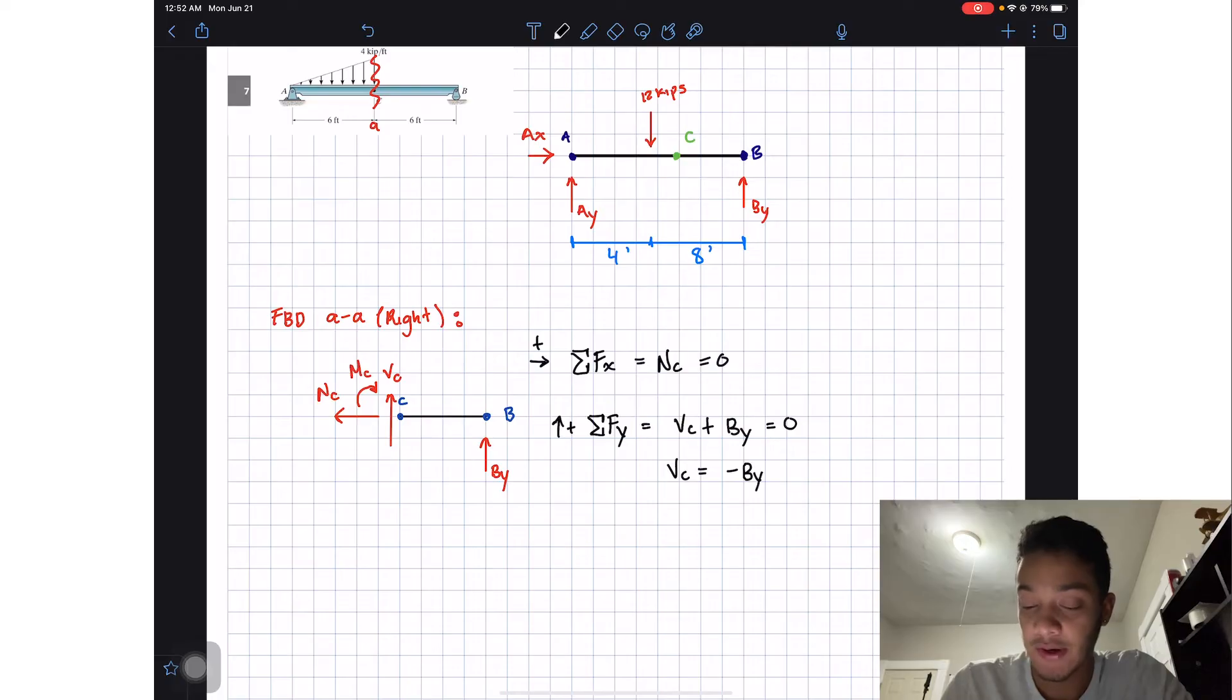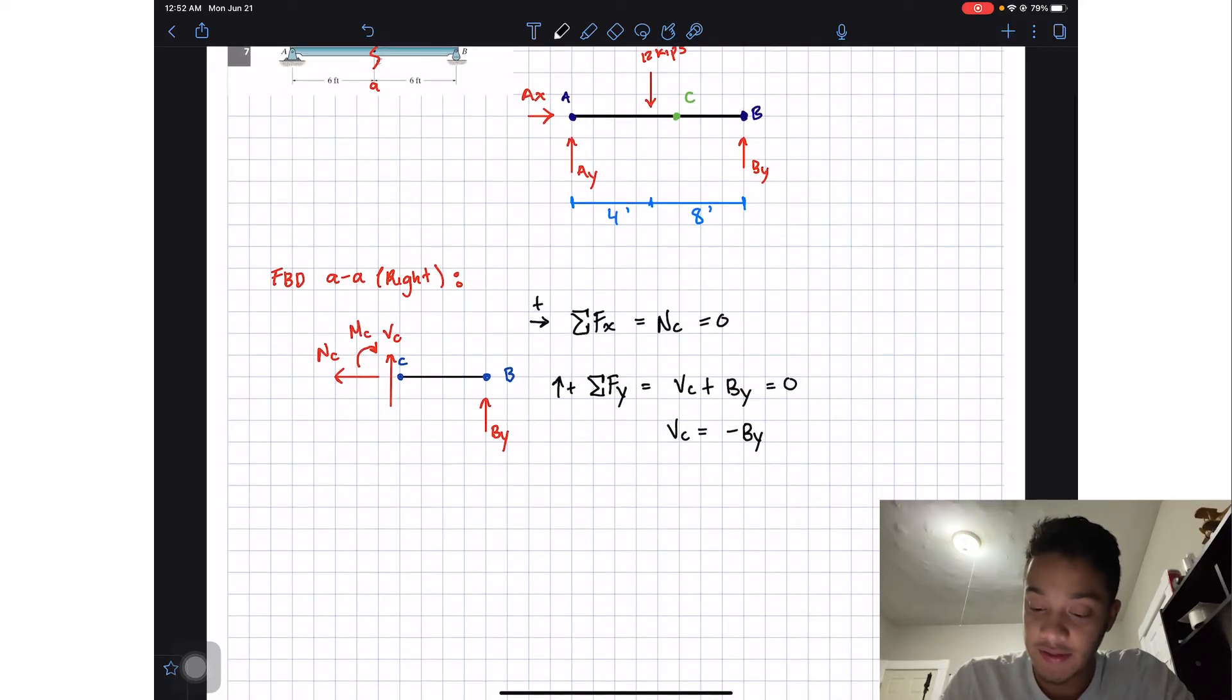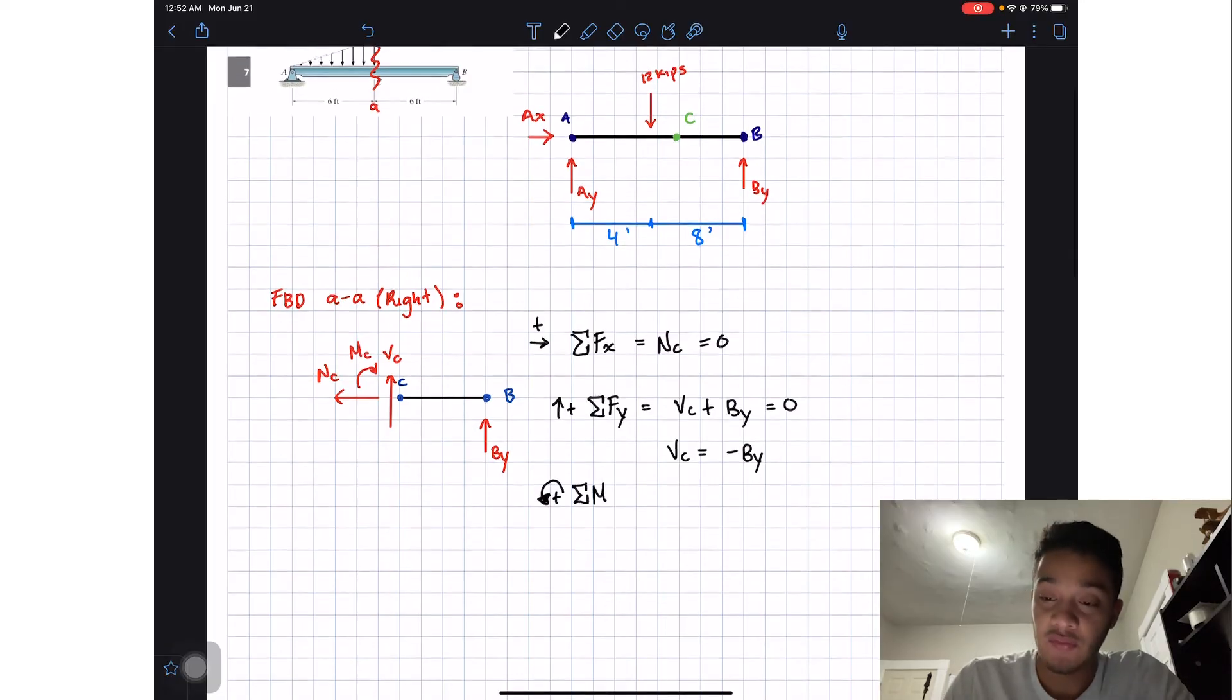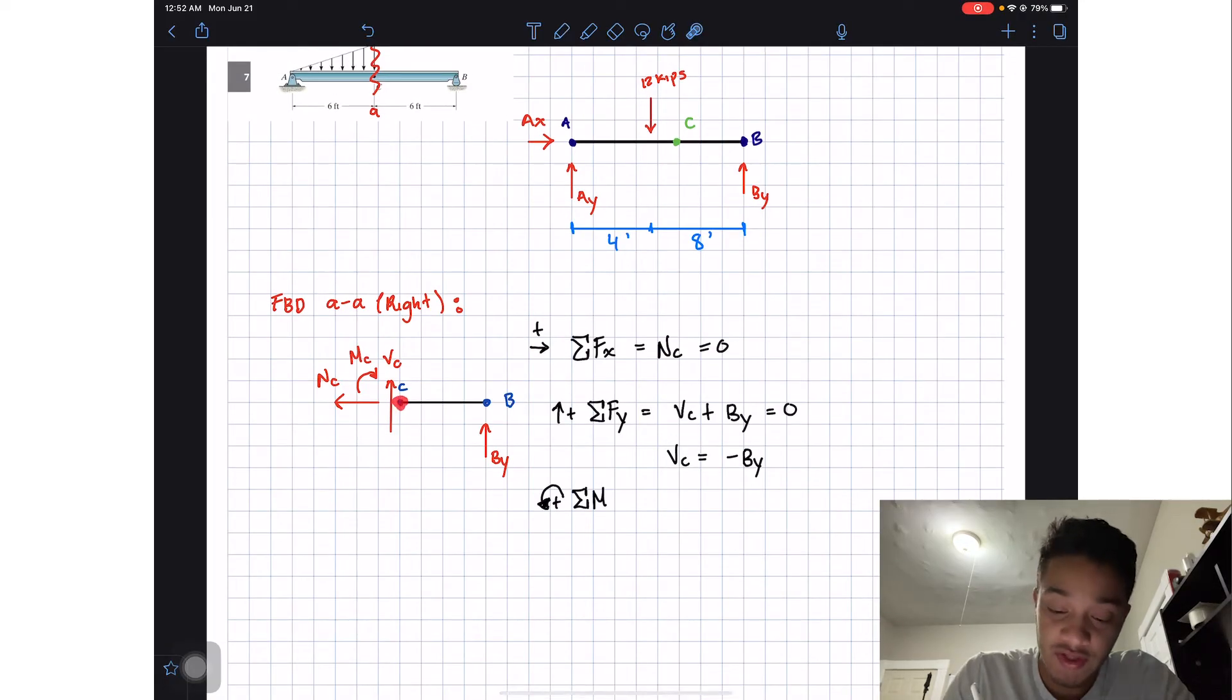Next if we do the summation of moments and say going counterclockwise is positive around point C, we cancel Nc and Vc, so we're only left with By and Mc. Mc is going clockwise so I'm going to put a negative, and then By will want to rotate my part counterclockwise so I'll have positive By.